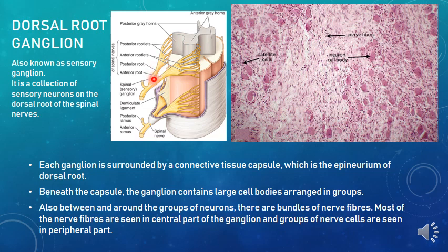This is the dorsal root ganglion, and this is the ventral root. Both the dorsal and ventral roots join together to form the spinal nerve, which then divides into a dorsal ramus and a ventral ramus. Now we are going to see the histology of this sensory ganglion, also called the spinal ganglion or dorsal root ganglion. It is a collection of sensory neurons on the dorsal root of the spinal nerve.